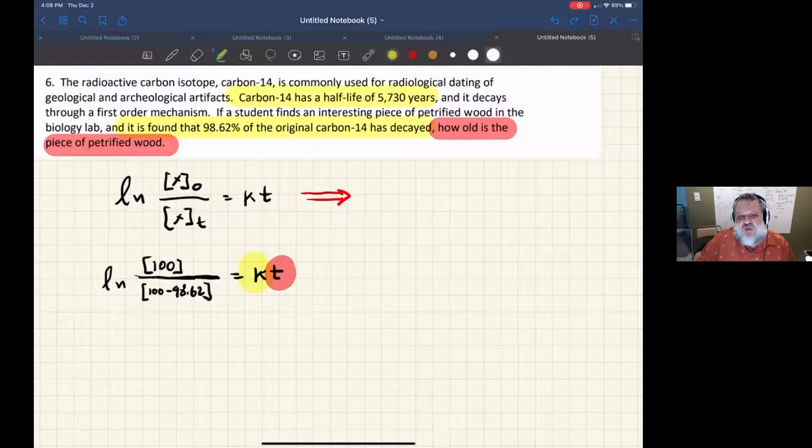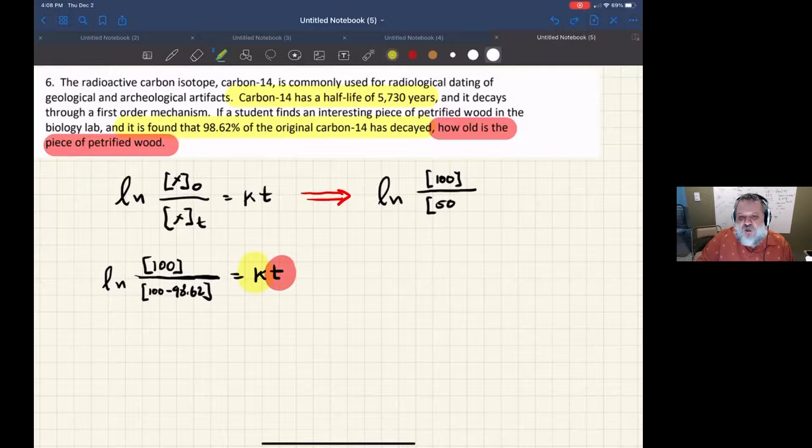If I give you the half-life, you can solve for the rate constant. Remember, the definition of half-life means half of the starting material remains. So if we start with 100 percent, then half is 50 percent, which equals k times t. This time we know t is 5,730.